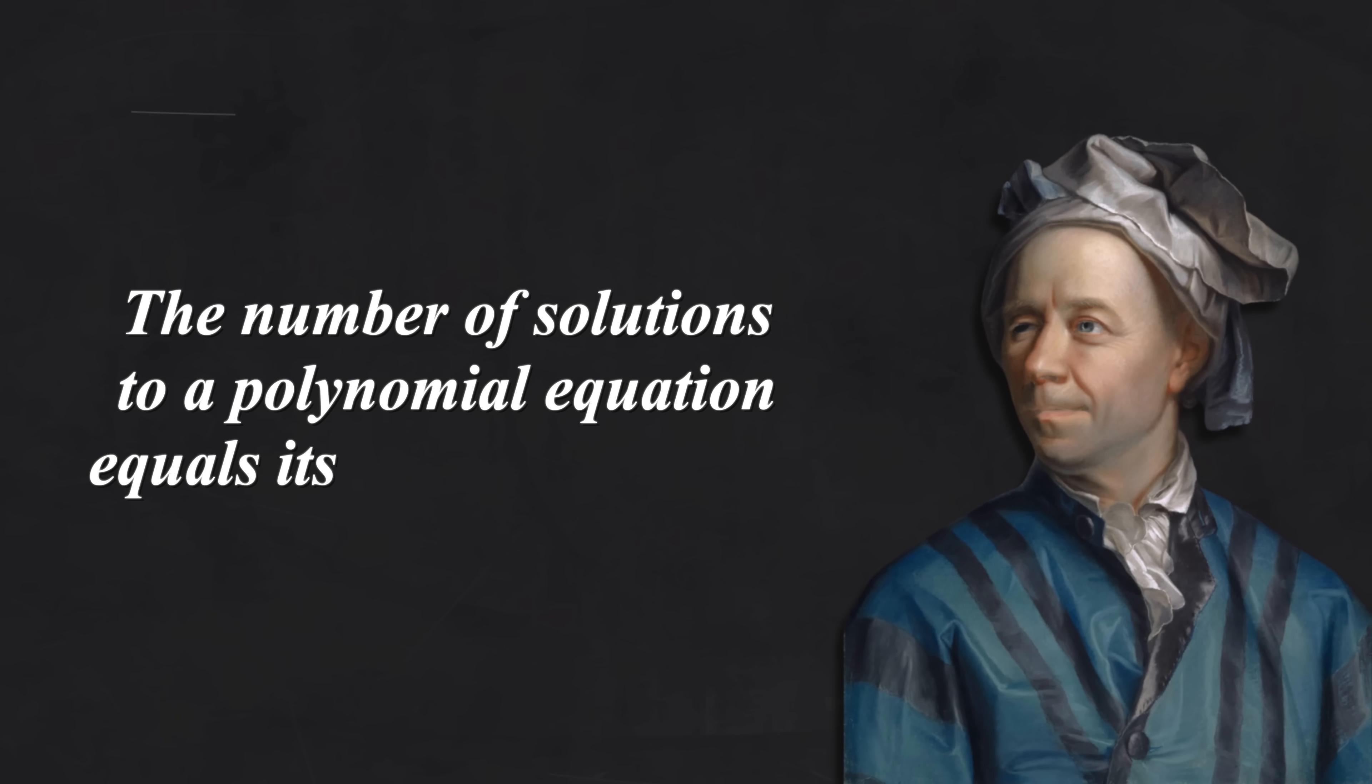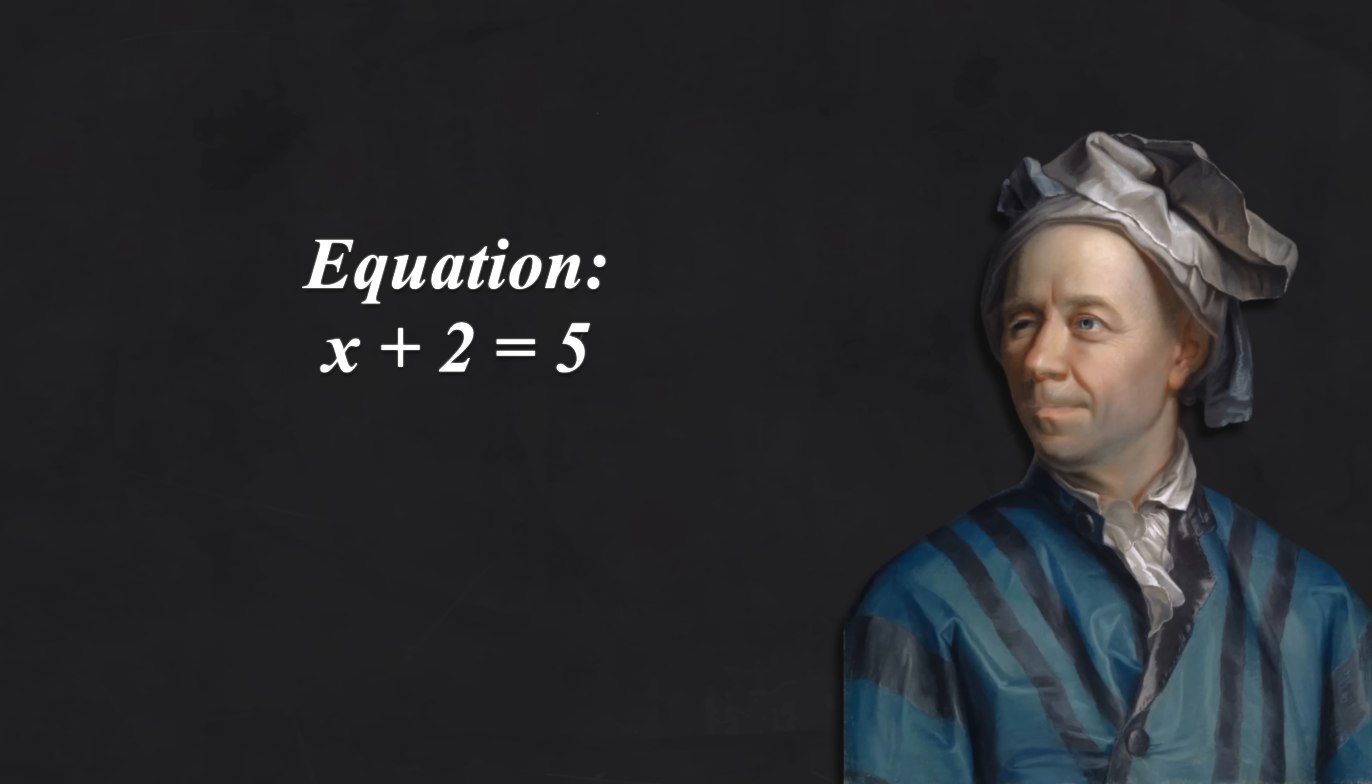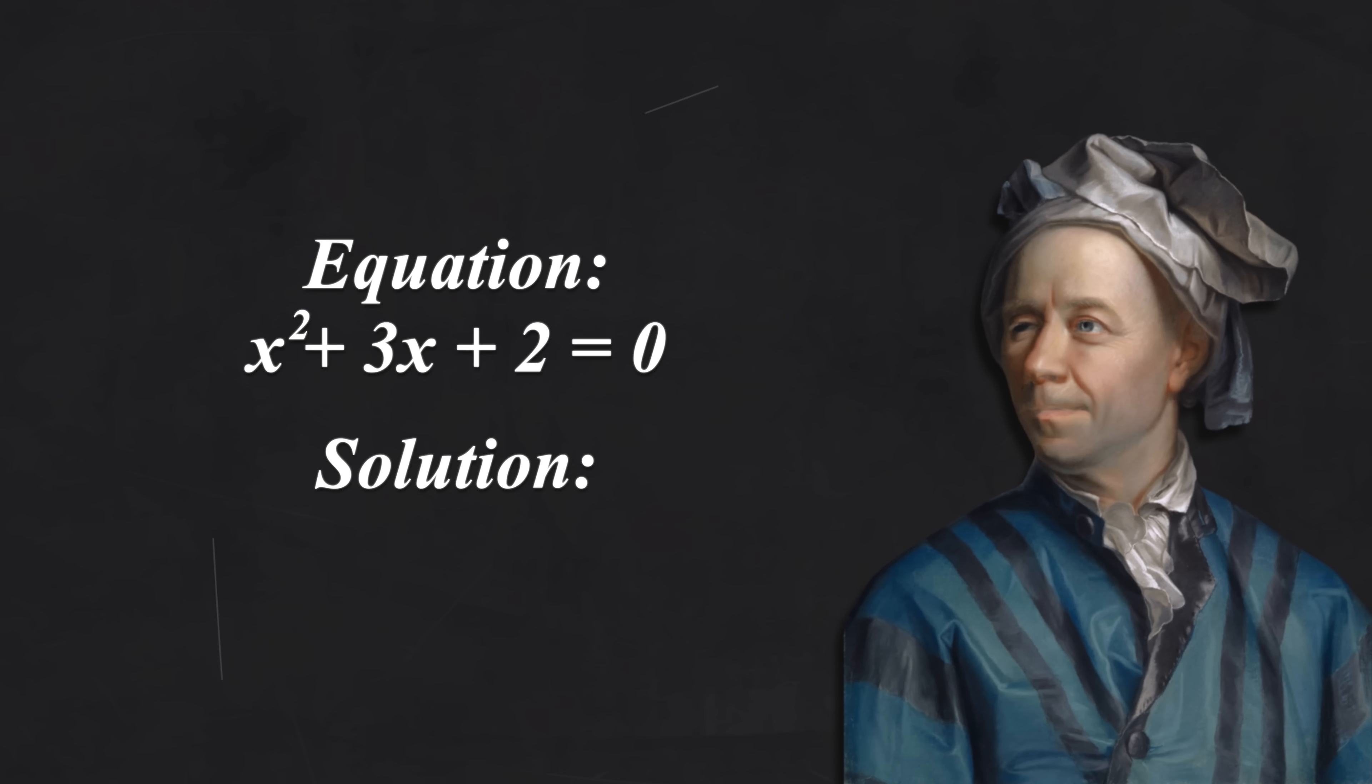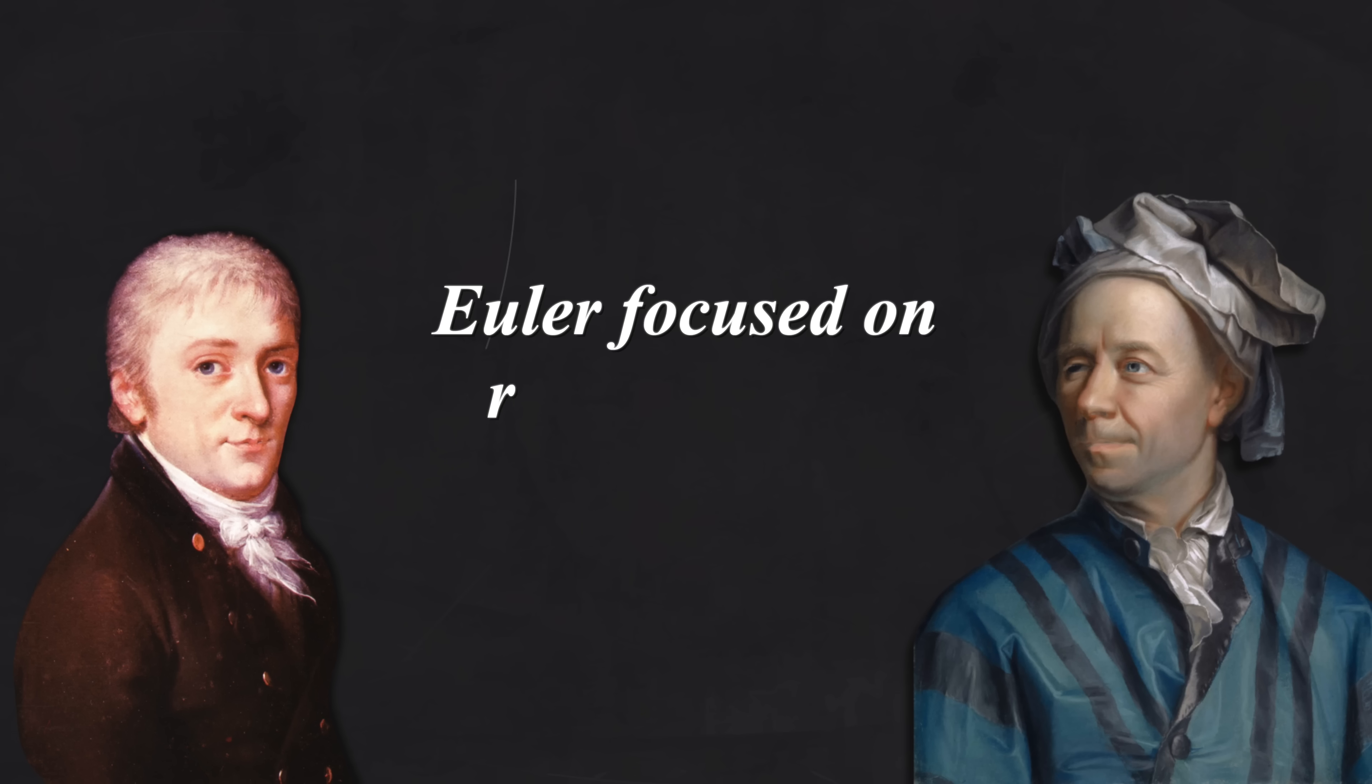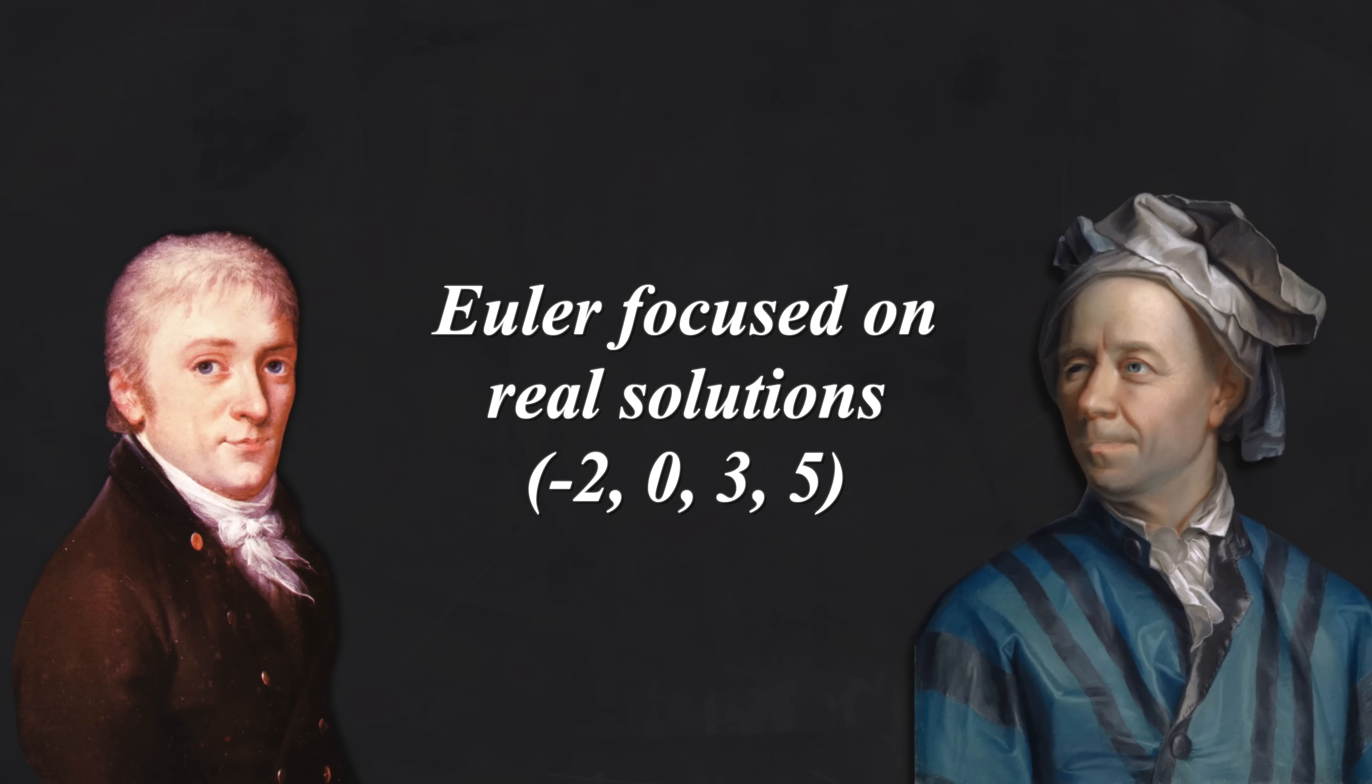In this work, Euler observed that the number of solutions to a polynomial equation equals its highest exponent. x plus 2 equals 5 has only one solution, x equals 3. Whereas x to the power of 2 plus 3x plus 2 equals 0 has two solutions, because its highest exponent is 2. However, Carl noticed gaps in Euler's observation. He only accounted for real solutions, numbers that can be plotted on a number line, like minus 2, 0, 3, and 5, and ignored complex numbers.